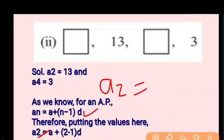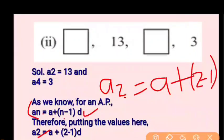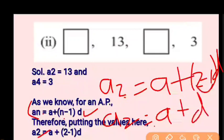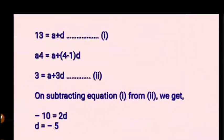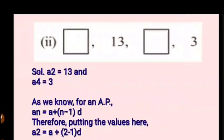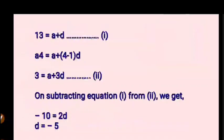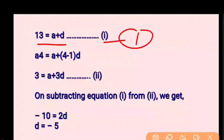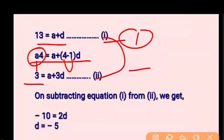For A2: comparing with AN = A + (N−1)D, we get A2 = A + D. Since A2 = 13, our first equation is 13 = A + D. For A4: A4 = A + (4−1)D = A + 3D. Since A4 = 3, our second equation is 3 = A + 3D.